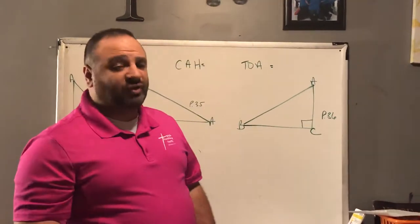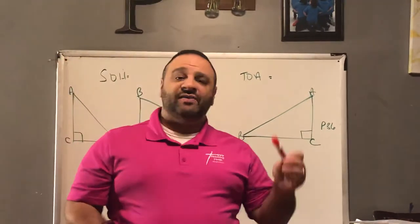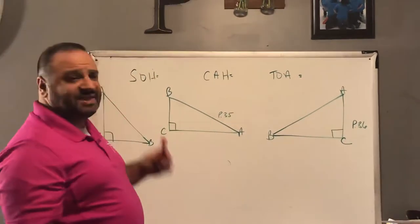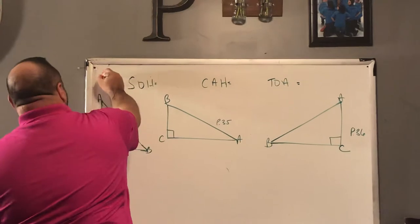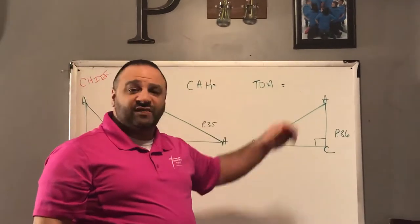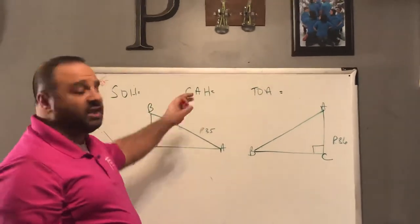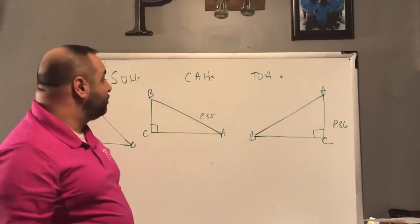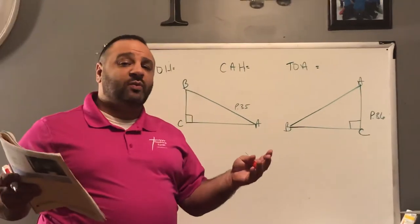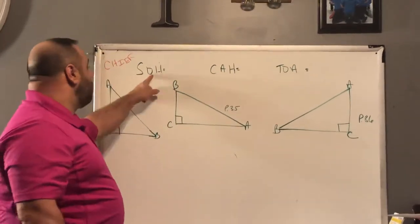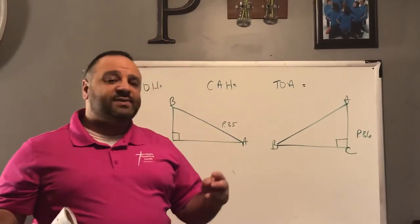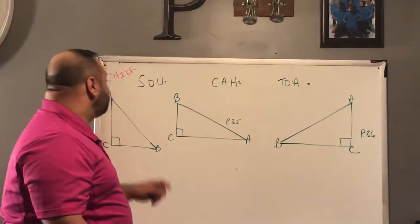There are three trigonometric ratios: the tangent, the cosine, and the sine. We came up with a little acronym — we call it Chief Sokotoa. This gives us an easy way to remember all of the ratios. Another simple way to commit this to memory is to say 'some old horse caught another horse taking out away.' Just simple ways to remember those trigonometric ratios.